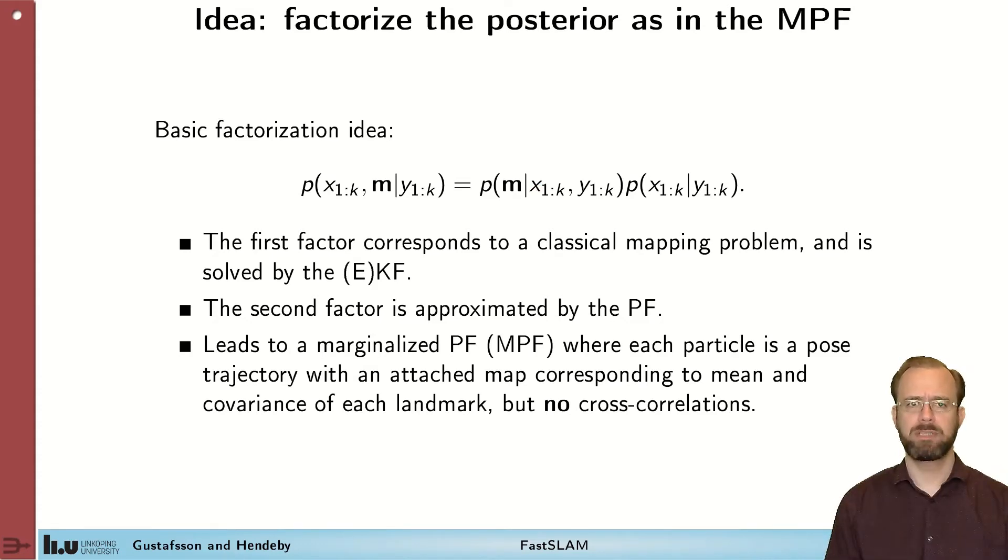One important property that we receive by making this factorization here is that the first term that relates to the map is conditioned on the trajectory of the sensor platform. So that means that we can treat all the landmarks individually. It gives us a complexity benefit compared to the extended Kalman filter where we need to treat them all at the same time and the cross correlations between them are important. How can we just lose the cross correlations? Well, we don't. They are encoded in the particles instead. So we need to use particles that encode that information.